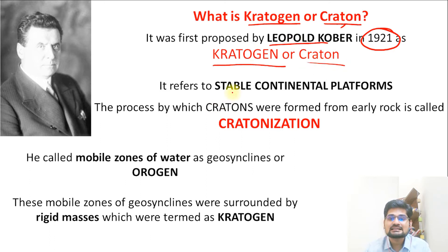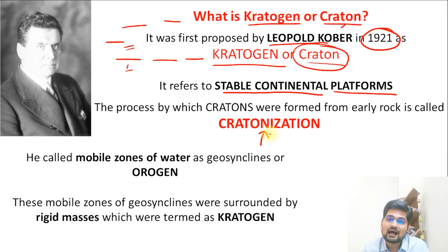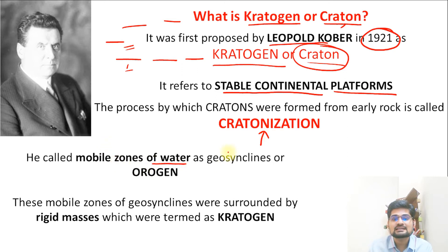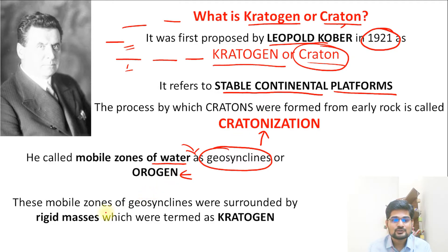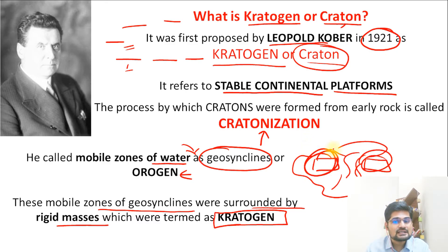The kraton was described as a stable continental platform. These stable continental platforms move on the deformed layer — the asthenosphere. This formation process was called kratonization, brought about by the gradual cooling of the earth. Kober called the mobile zones of water as geosynclines or orogens, where sediments from the continental masses were deposited. These mobile zones of geosynclines were surrounded by rigid masses termed kratogens.